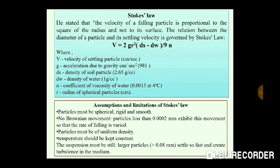The assumptions and limitations of Stokes Law are: first, particles must be spherical, rigid, and smooth. Particles smaller than 0.0002 mm exhibit Brownian motion, causing variable settling rates, so Stokes Law does not apply to them. Particles must be of uniform density. Temperature should remain constant throughout. The suspension must remain still, as large particles settle very fast and cause turbulence in the medium.